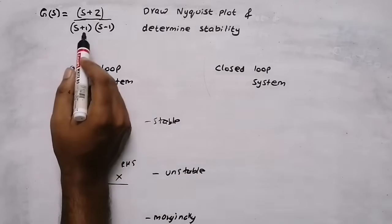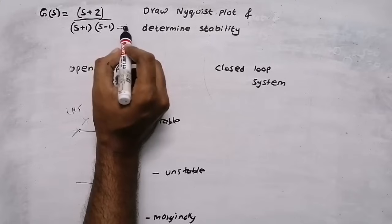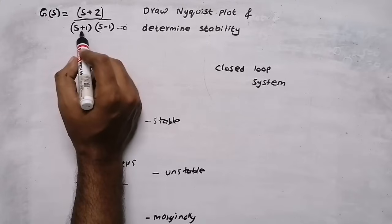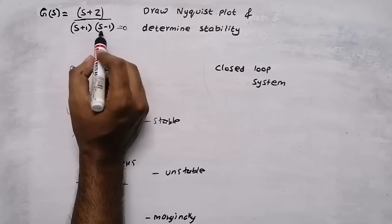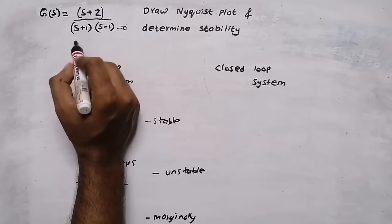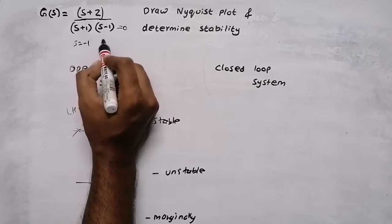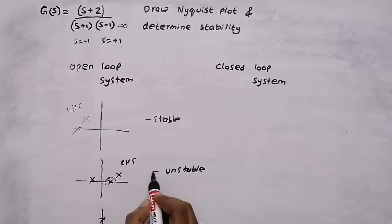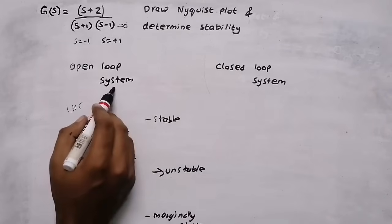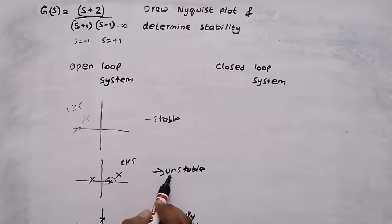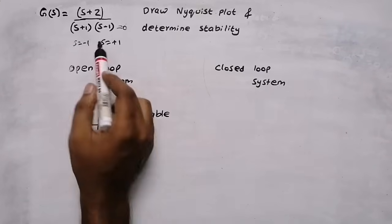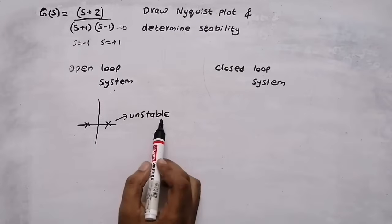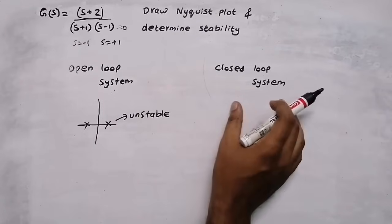To find poles we will equate the denominator equal to zero. We will get either S plus one equal to zero, or S minus one equal to zero, giving us S equal to minus 1 or S equal to plus 1. There is a pole on the right hand side, therefore this open loop system is unstable. But we need to find the stability of the closed loop system.